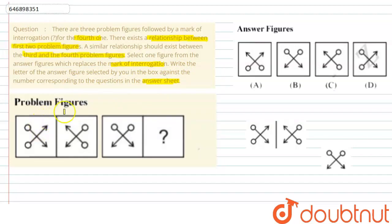This is basically saying that the first and second figures have a relationship. That relationship you have to establish in the third and fourth figures. The third figure is known, and the fourth figure you have to find out.